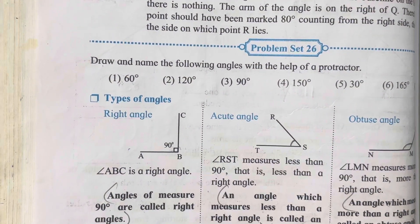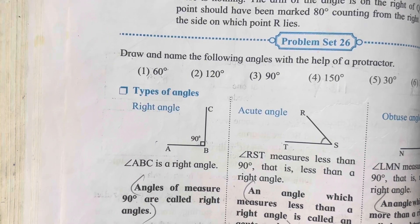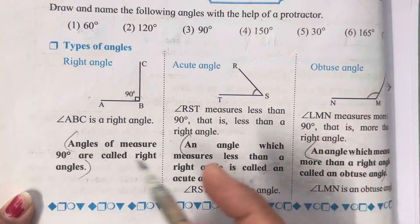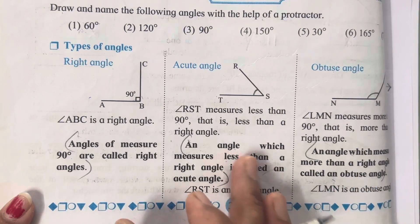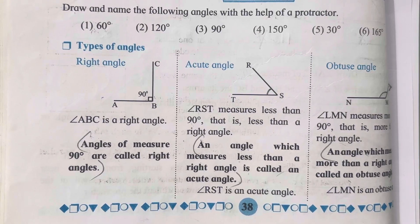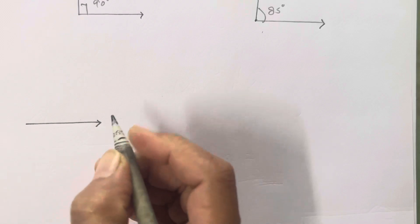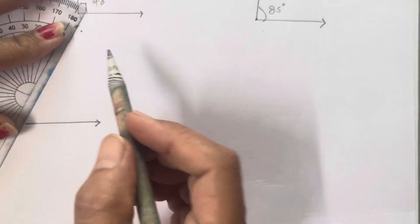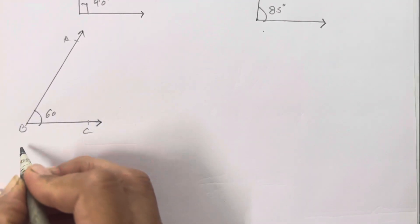In Practice Set 26, we have to draw angles of given measures. The degrees given are 60, 120, and others. Draw a base line, place the protractor center, and take inside numbers. For 60 degrees, mark at 60 and join — name it ABC. Angle ABC equals 60 degrees.